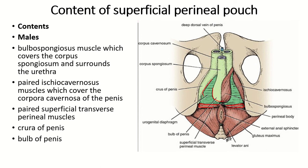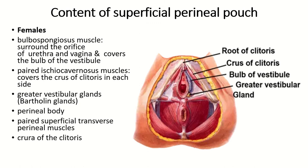In the female, the contents of the superficial perineal pouch include the bulb of the vestibule and the vestibular glands, which are covered by the bulbospongiosus muscle. If we remove the bulbospongiosus, we see the bulb of the vestibule and the crus of the clitoris, which is covered by the ischiocavernosus muscle. The perineal body and the two superficial transverse perineal muscles are also contents of the superficial perineal pouch in the female.